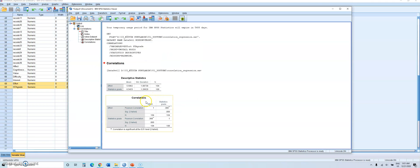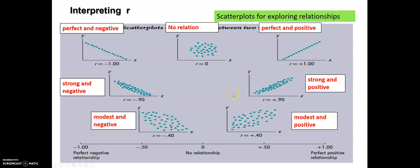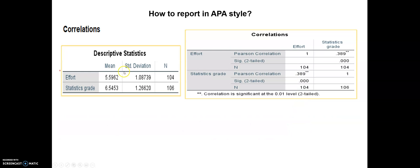SPSS produces two kinds of tables. This is the descriptive statistics table, and the other one is the correlation coefficient matrix. I'll copy this output to PowerPoint. In the descriptive statistics table I have my variables — effort and statistics grade — with their means, standard deviations, and sample sizes. In the second table you can see the correlation matrix. SPSS compares all the variables with each other. Effort with effort is of course one, since they are the same variable. The key result is the correlation between effort and statistics grade.